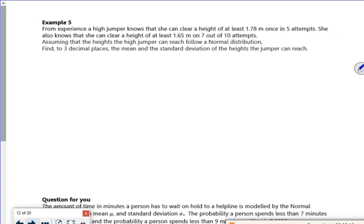Right, so let's have a look at this then. So it says, from experience, a high jumper knows that she can clear a height of at least 1.78 metres once in five attempts. She also knows she can clear a height of at least 1.65 metres on 7 out of 10 attempts.